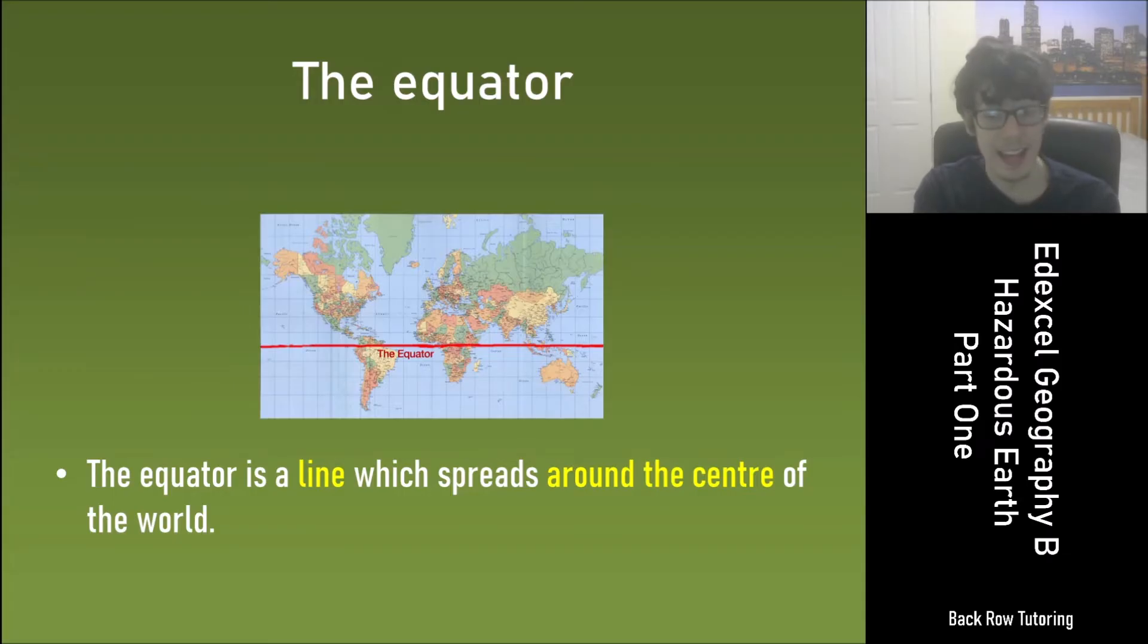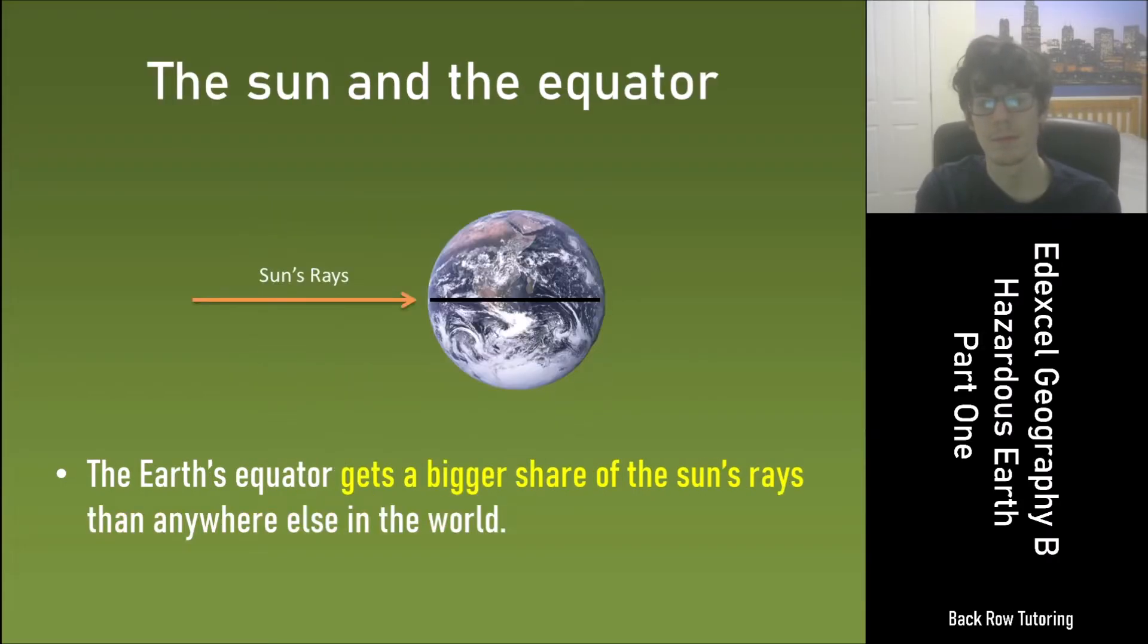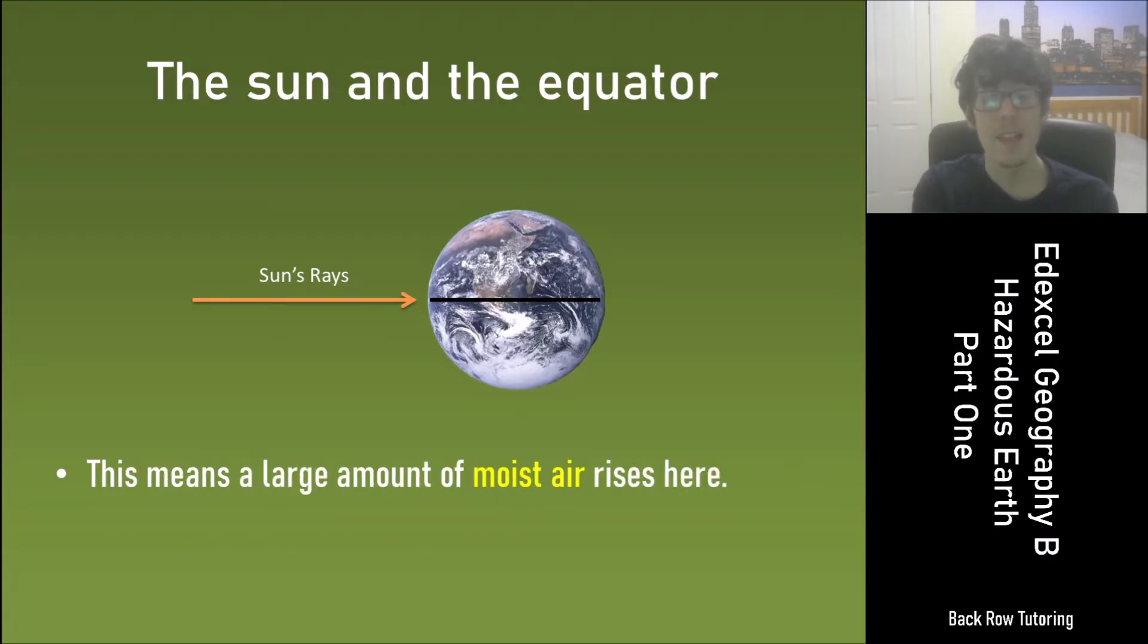The equator is a line which spreads around the centre of the world. This line is imaginary and in reality there is no line around the centre of the world. The Earth's equator gets a bigger share of the Sun's rays than anywhere else in the world. This means a large amount of moist air rises here.